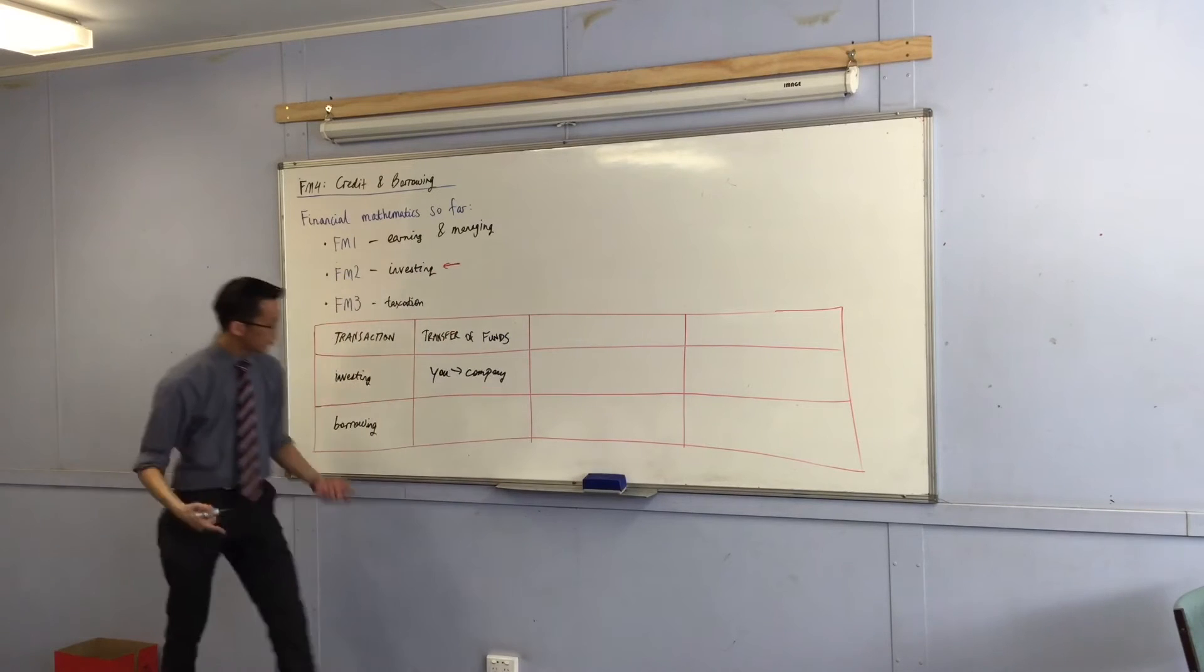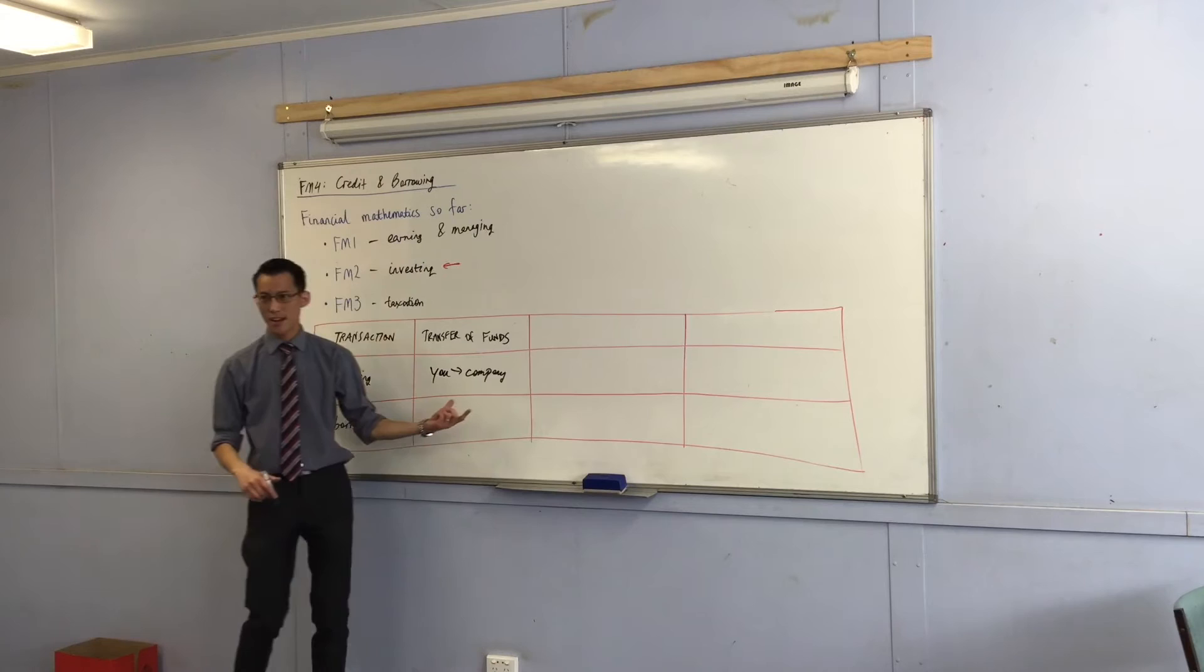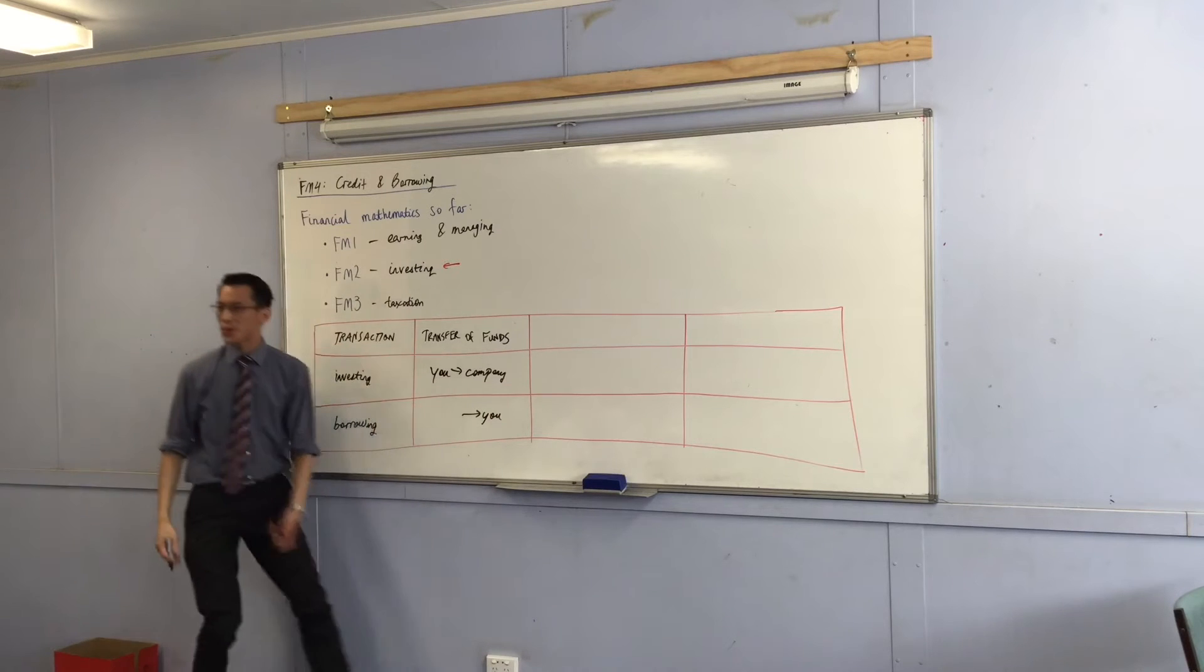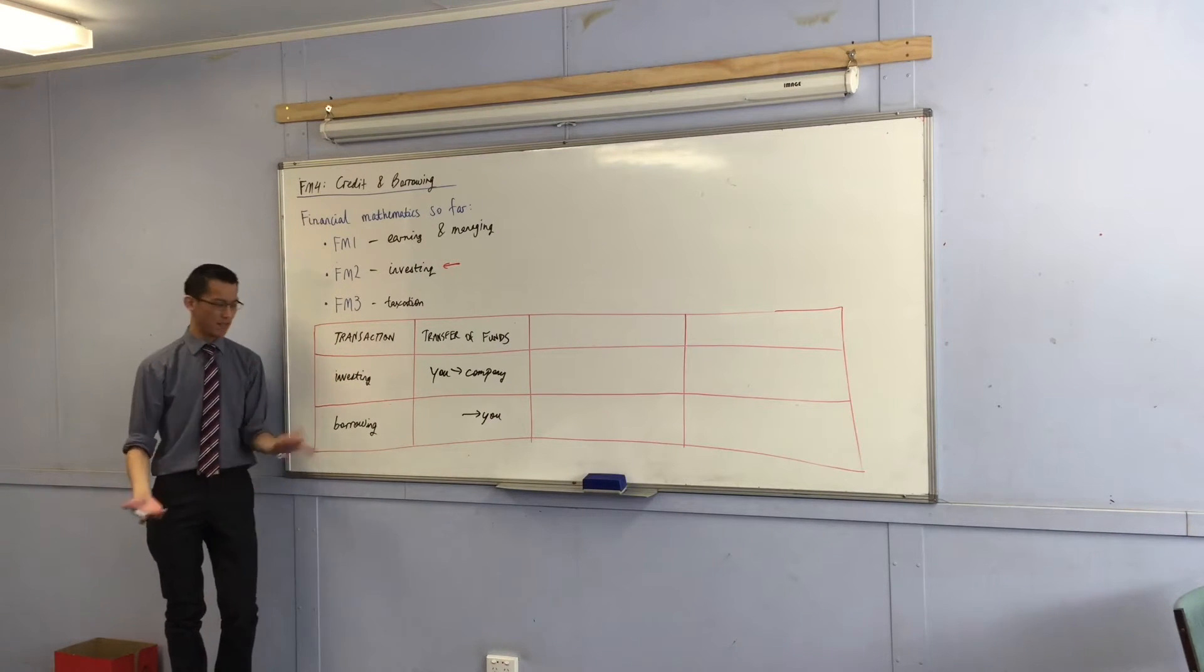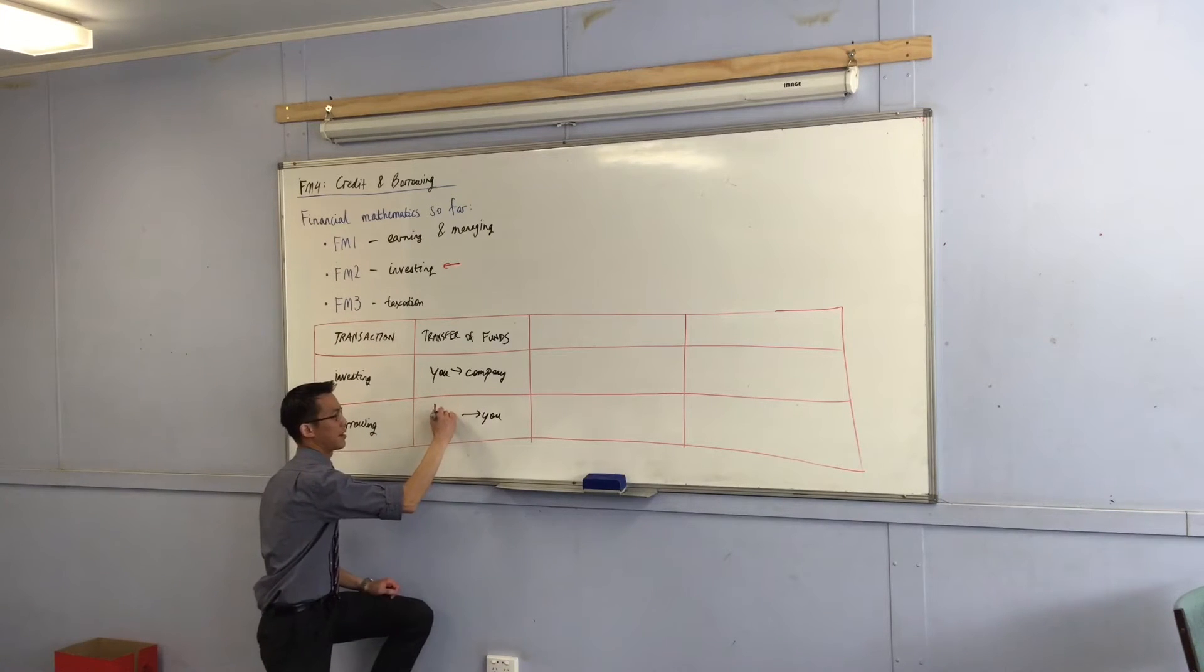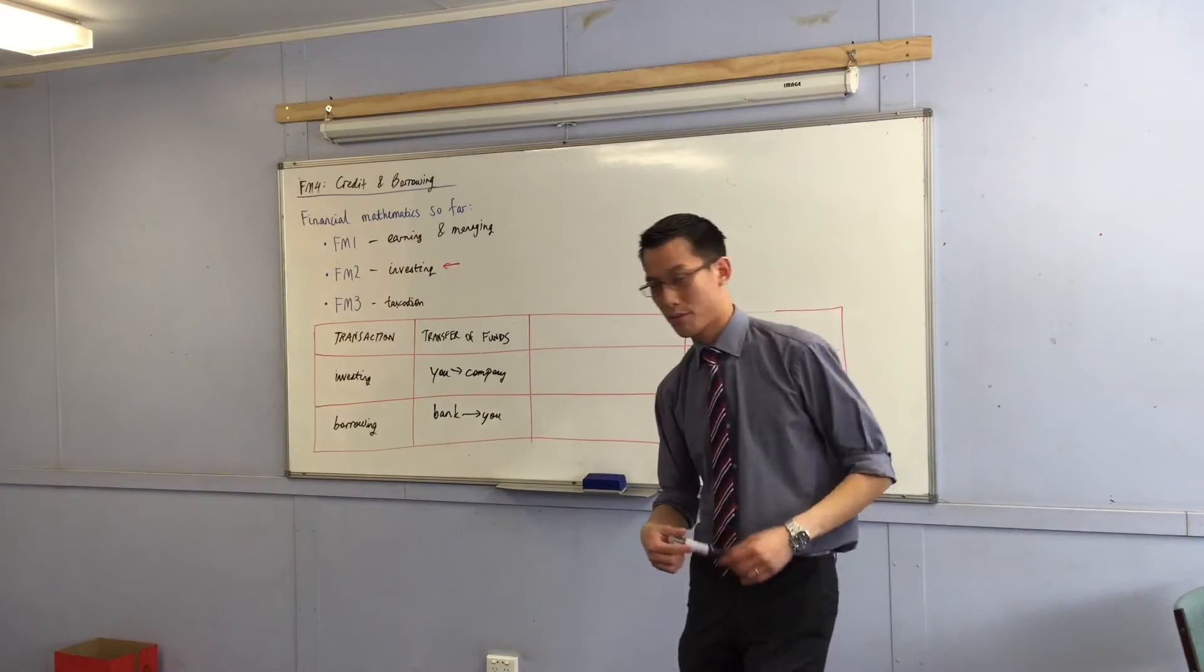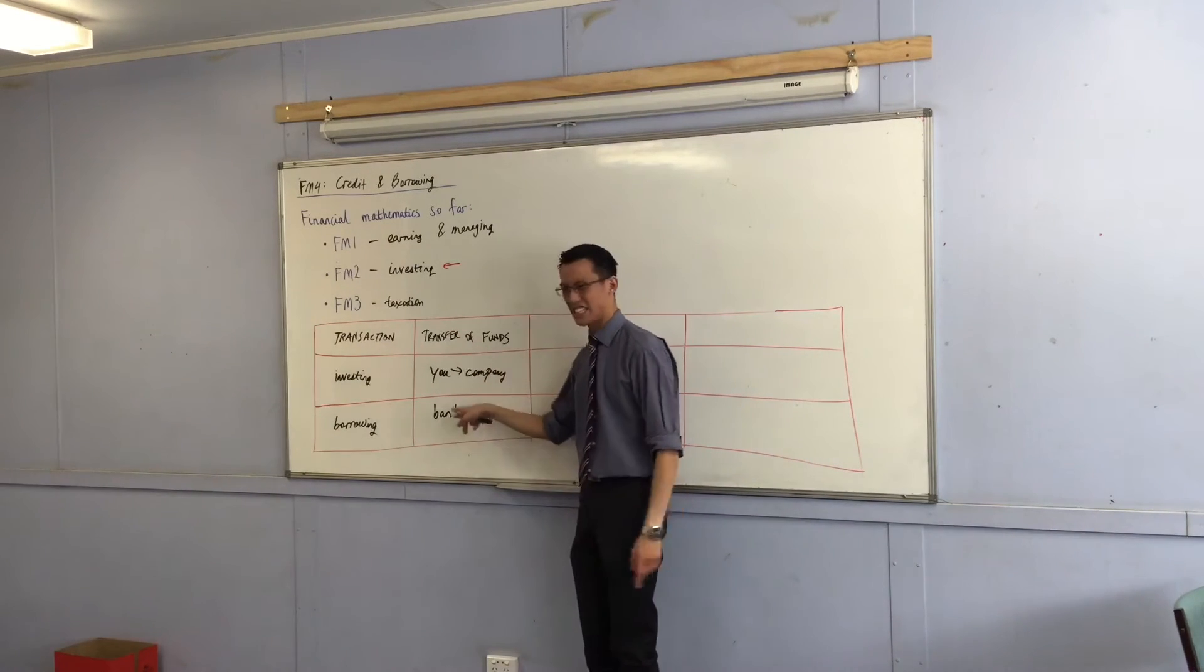Now again there's a transfer of funds when you borrow money. I'll give you the easy bit. This is the same idea looked at from the opposite direction. So you are now on the receiving end of money when you're borrowing money. Generally speaking where would you borrow money from? From the bank, generally speaking. Of course there are other people you could borrow from. You could borrow from a loan shark if you're in trouble, you could borrow from your parents. All the same concept just slightly different here.